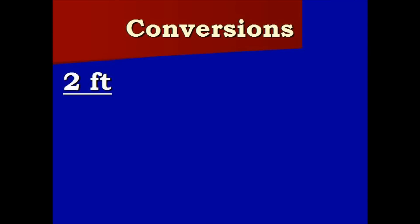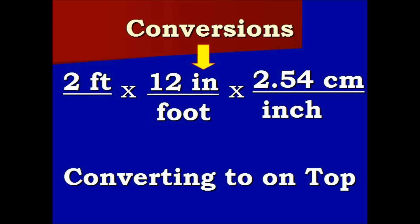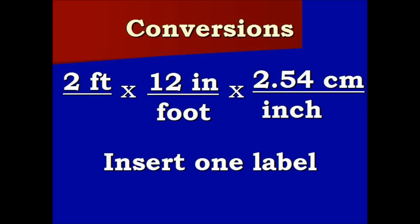Now what we're going to do is we're going to multiply both of those conversion factors against two feet to convert it. Everything that we're converting to is on top. What we're trying to do is we're going to insert one label to cancel another one.